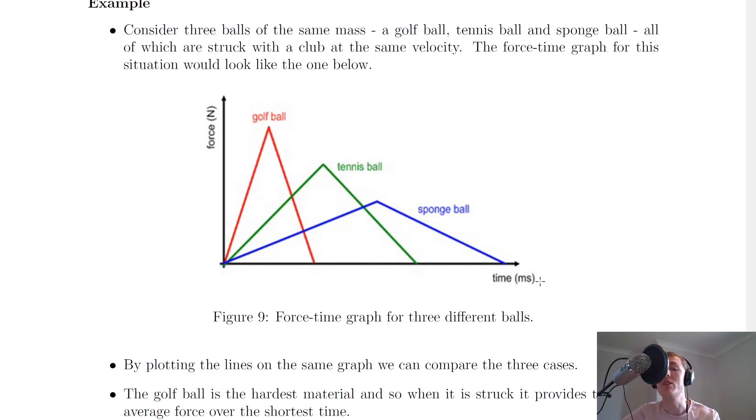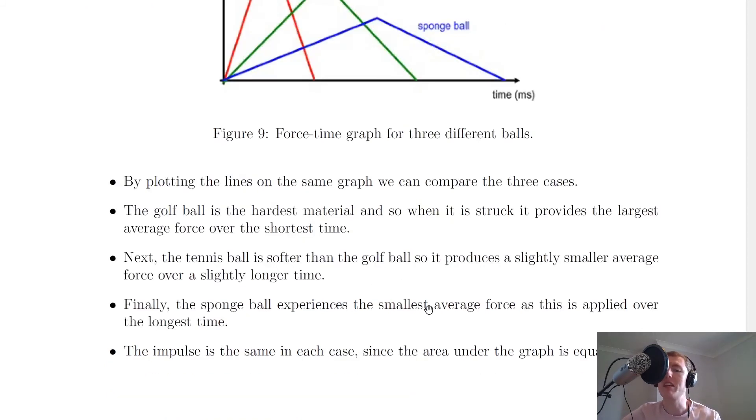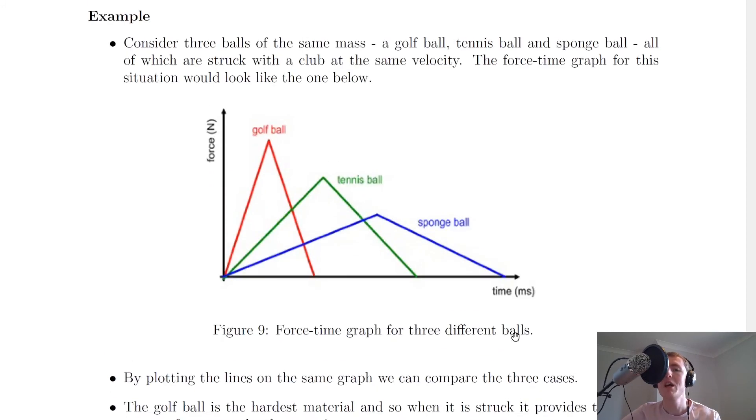Finally, the sponge ball is the softest material of the three, and so this is going to experience the smallest average force as this is applied over the longest time. You'll see the longest time there and the smallest average force at this point here.